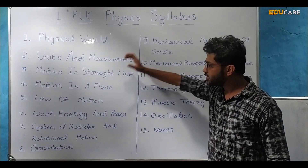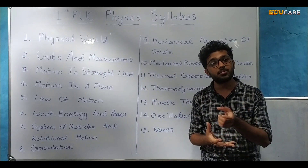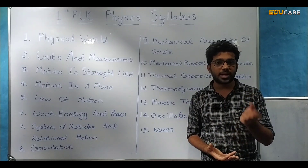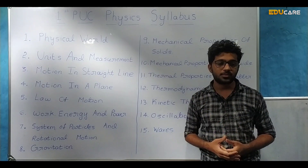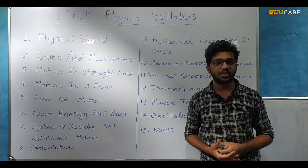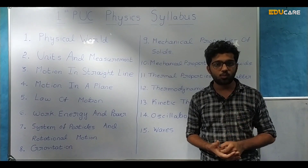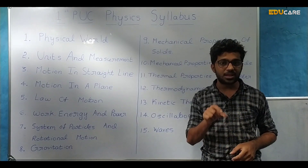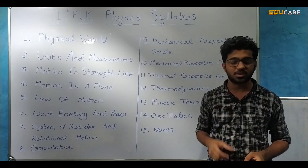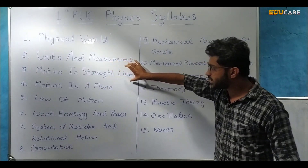The next chapter is Motion in a Straight Line. In this chapter we are going to study what is the meaning of motion and the different kinds of motion like uniform motion and non-uniform motion. We will also cover concepts like velocity, speed, acceleration, distance, displacement, and equations of motion. For example, the equation s equals ut plus half a t squared. These are the concepts we are going to study in the straight line chapter.